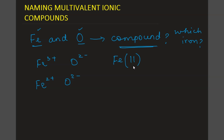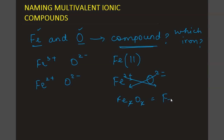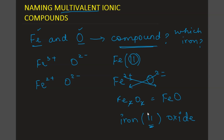Using iron two positive with oxygen two negative, we crisscross to get Fe2O2. Since the numbers are equal, we reduce to the lowest terms, giving us FeO — iron oxide. When naming it, we must indicate which iron charge was used to form the compound. Since iron two positive was used, the name is iron(II) oxide. This Roman numeral in brackets distinguishes multivalent naming from univalent naming.